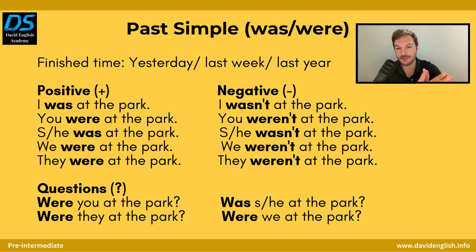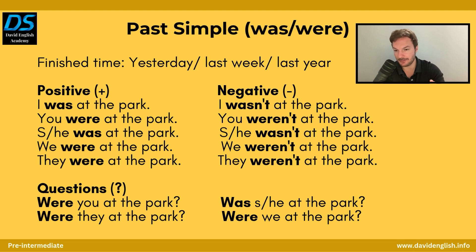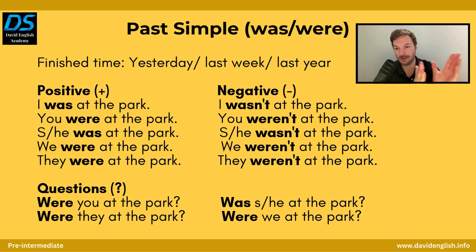You can check it out right here. I was at the park. You were at the park. She or he was at the park. We were at the park. They were at the park. That's the positive form.